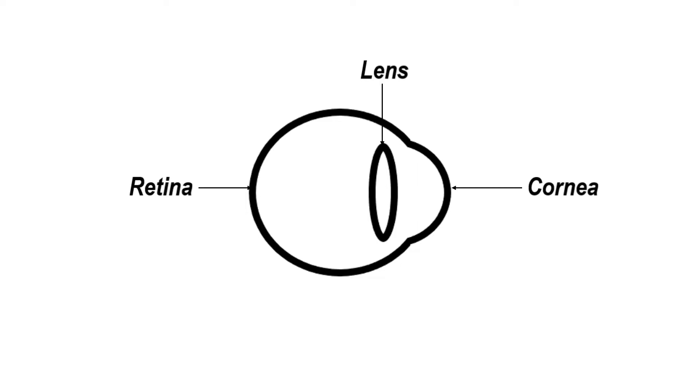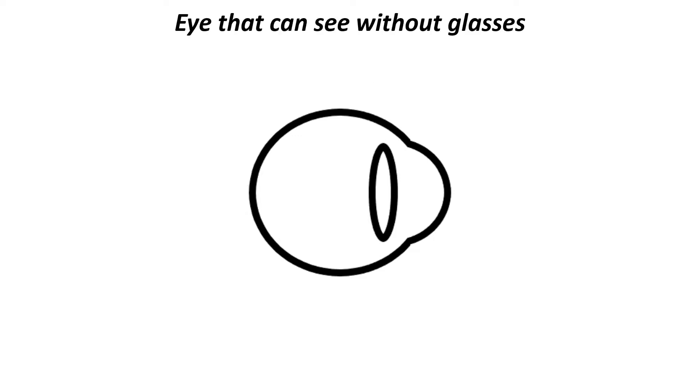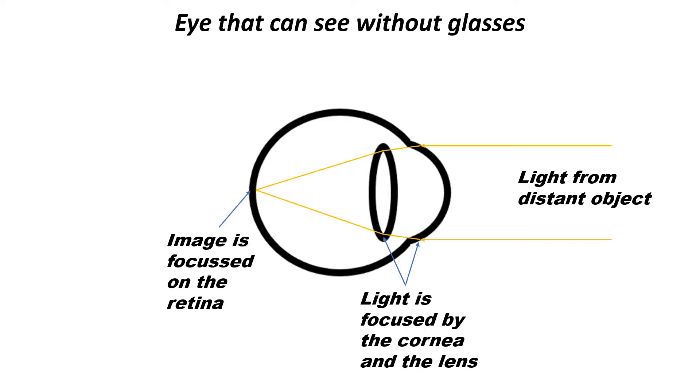Whenever you are looking at something, in order for you to see it clearly, the light from it must be focused directly onto your retina. So with an eye that doesn't need glasses, when you are looking at a distant object, such as a TV screen, the lens remains in its weakest state and the eye does not have to exert any active focusing effort. The light from the distant object enters the eye and is focused by the cornea and the lens onto the retina.